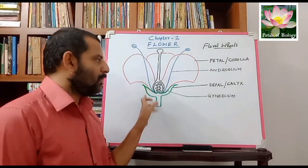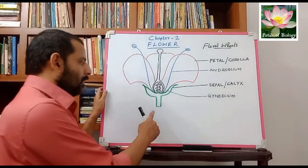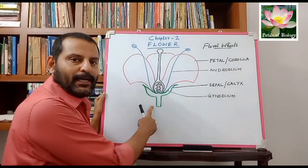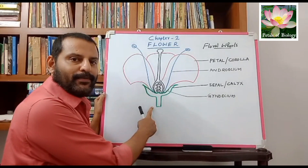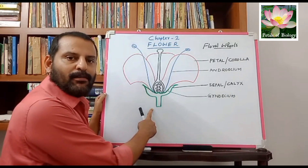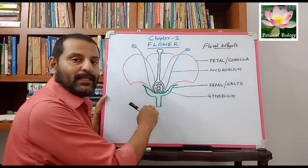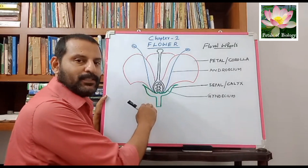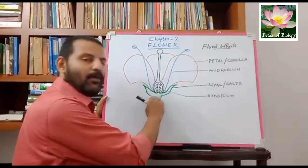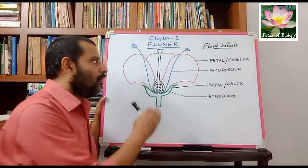This picture shows four important parts of a flower. This is the stalk of the flower, which we have already discussed in the previous class — it is known as the pedicel or flower stalk. The top of the pedicel is flattened to form a structure known as the thalamus, and on the thalamus all the floral organs are arranged.